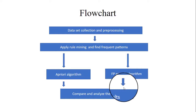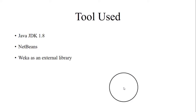The flowchart for the whole process: first, collection and preprocessing of the dataset; then applying rule mining to find frequent item sets using the Apriori algorithm and FP Growth algorithm; and after that comparing and analyzing the results of both algorithms. The tool used for both algorithms is Java JDK, NetBeans, and WEKA as an external library.